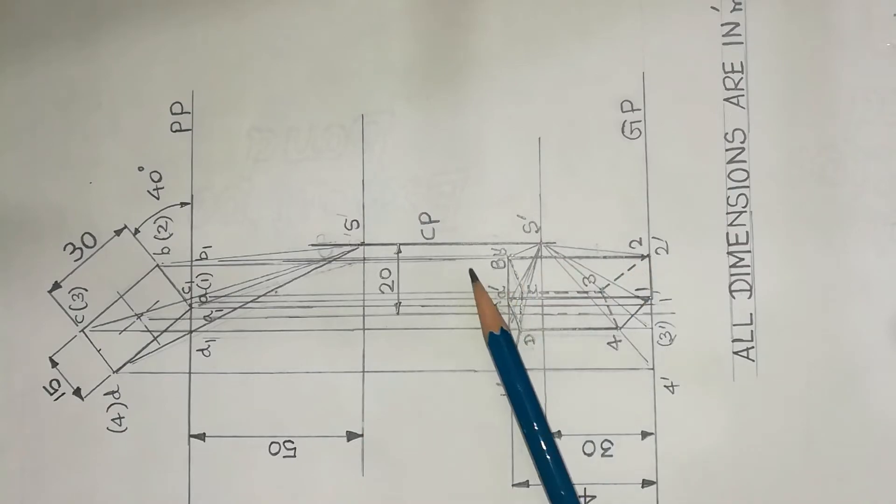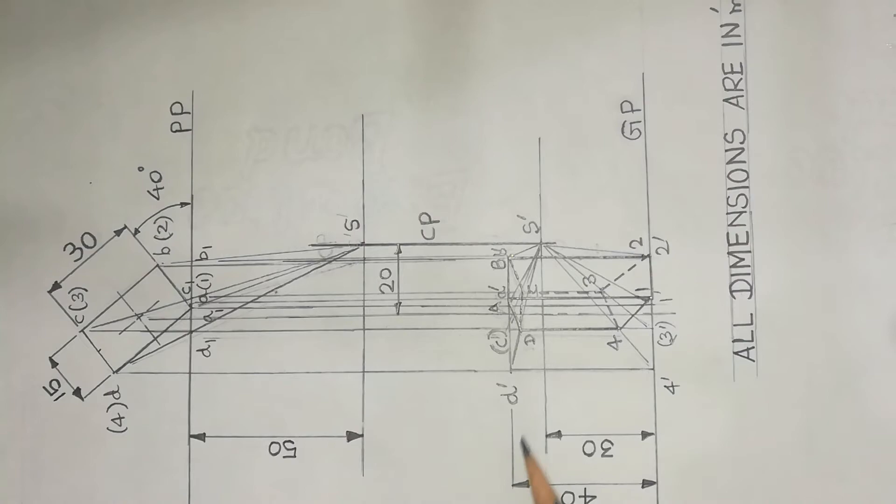The front view shows the height. The height of the rectangular prism is 40 mm. It rests on GP, the ground plane. The 40 mm height line originates from the front view.